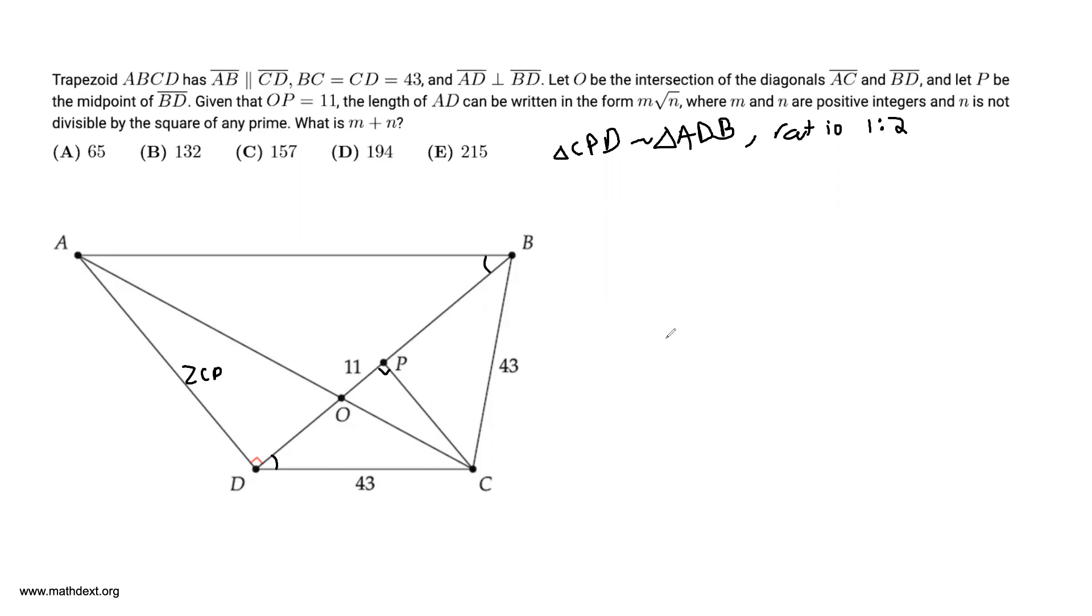In this case, we're going to claim that triangle ADO is similar to triangle CPO with the same similarity ratio. Well, ADO is bigger than CPO, so the ratio would be 2 to 1 in this case.